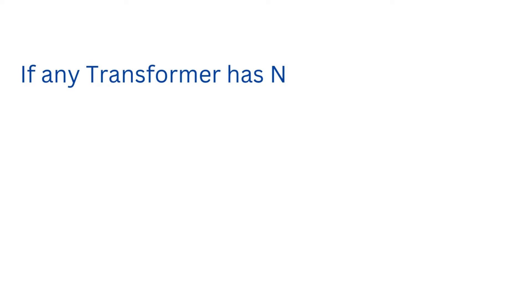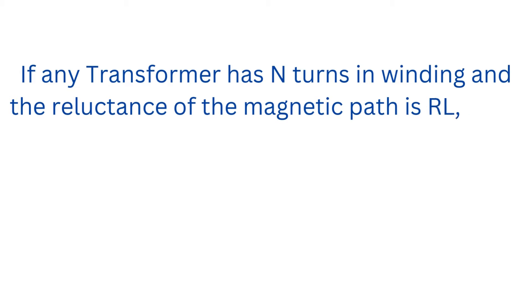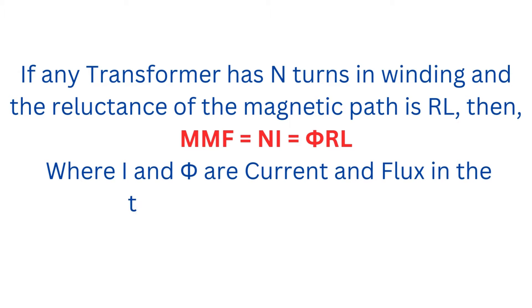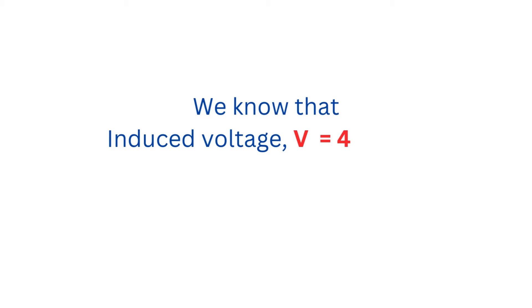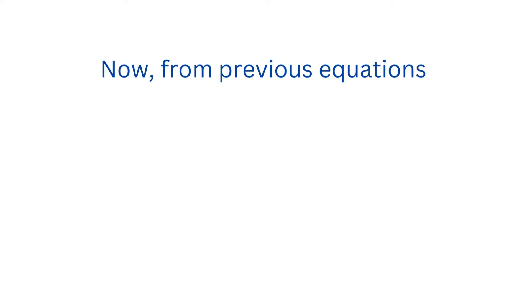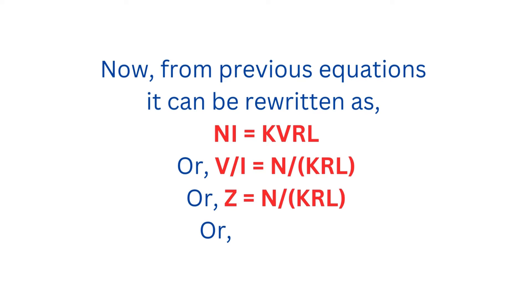Let's understand with a mathematical explanation. If any transformer has N turns in winding and the reluctance of the magnetic path is R_L, then MMF = NI = φ·R_L, where I and φ are current and flux in the transformer respectively. We know that induced voltage V = 4.44·φ·F·N, or V proportional to φ, or φ = KV, where K is a constant. From the previous equations, it can be rewritten as NI = KV·R_L, or V/I = N/(K·R_L), or Z = N/(K·R_L), so Z is proportional to 1/R_L.